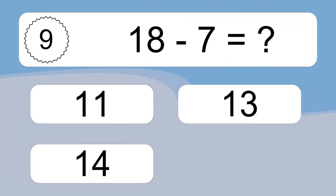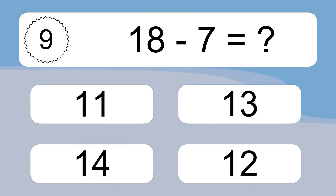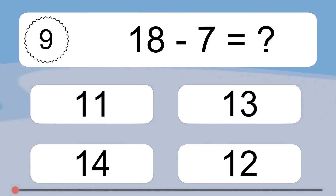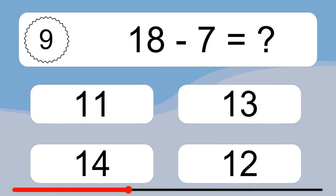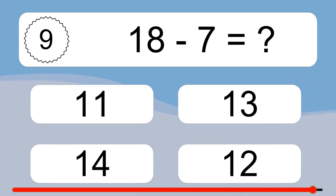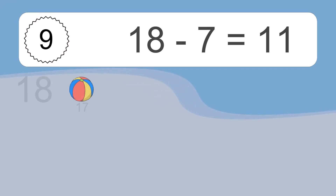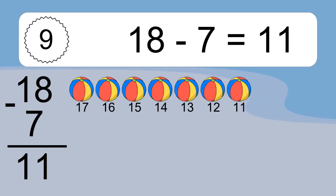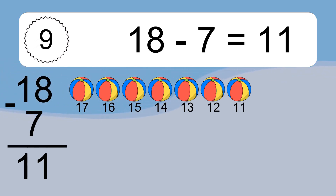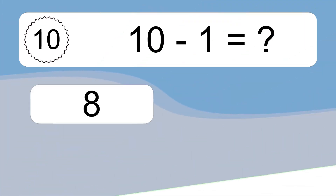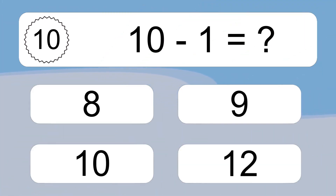18 minus 7 equals what? 18 minus 7 equals 11. Let's count it: 17, 16, 15, 14, 13, 12, 11. 10 minus 1 equals what?